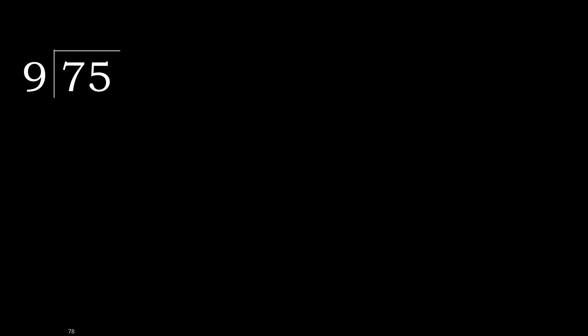75 divided by 9. 7 is less, therefore next. 75 is not less, therefore with 75. 9 multiplied by which number is nearest to 75 but not greater? 9 multiplied by 9 is greater. 9 multiplied by 8 is 72, which is not greater.